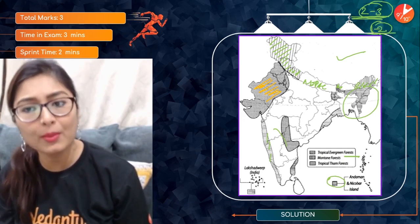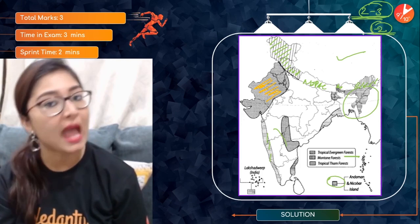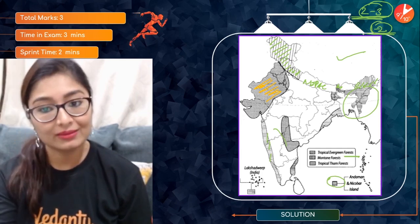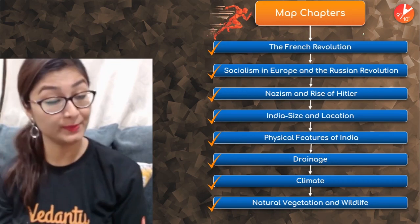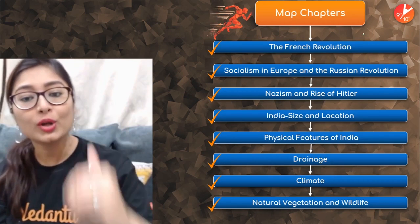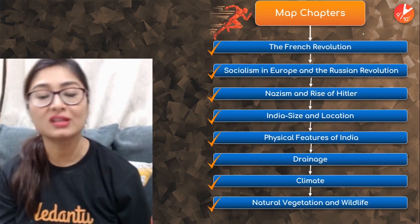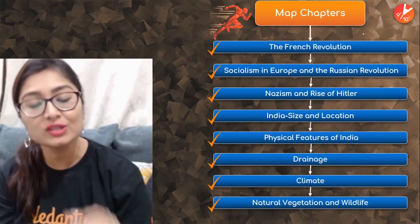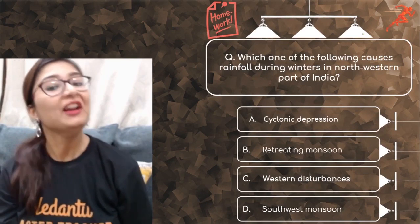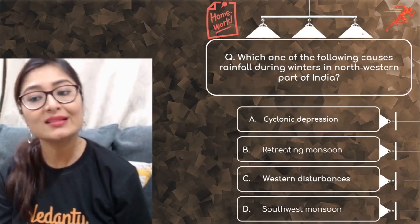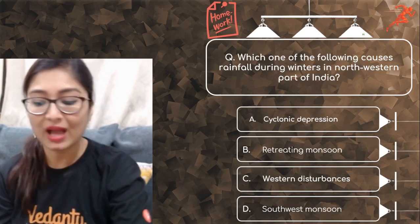With this, we have finished the map work chapters — a super quick, short, and crisp session. There's no lengthy explanation needed; it's about knowing locations. This has touched upon all the chapters and given you an idea of what questions can come. Homework question: which of the following causes rainfall during winters in the north-western part of India — cyclonic depression, retreating monsoon, western disturbances, or southwest monsoon? Give your answer in the comment section.